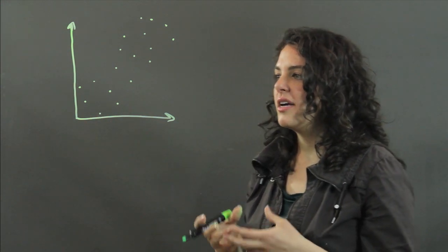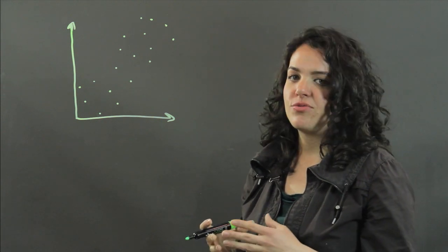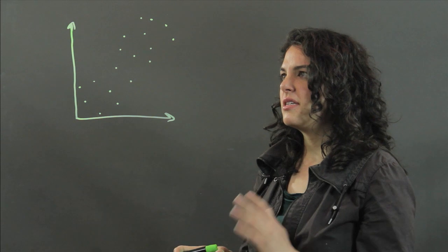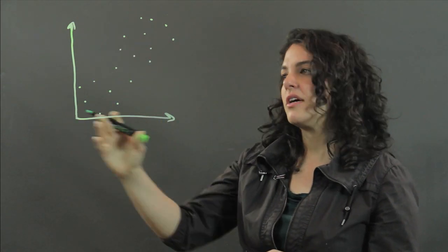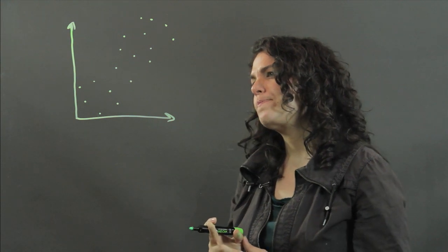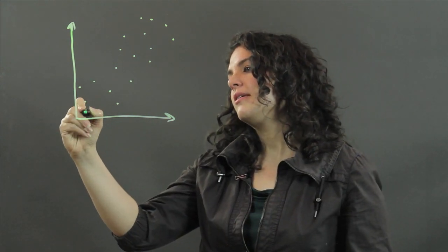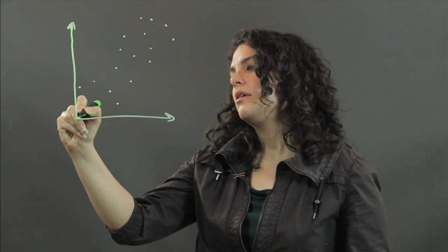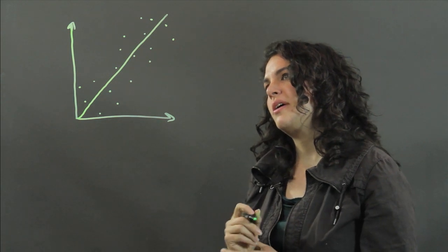Now to draw a line of best fit, you just want to draw a line that best represents the data and you want roughly the same amount of data points on each side of the line. So I'm going to say a line like this seems to work best.